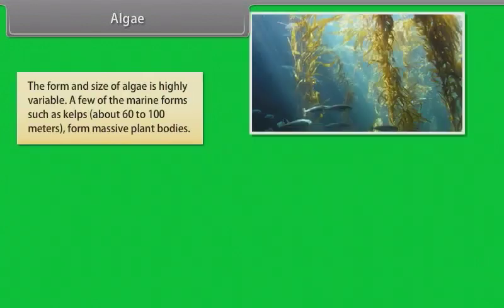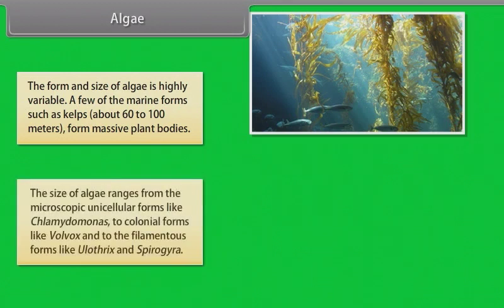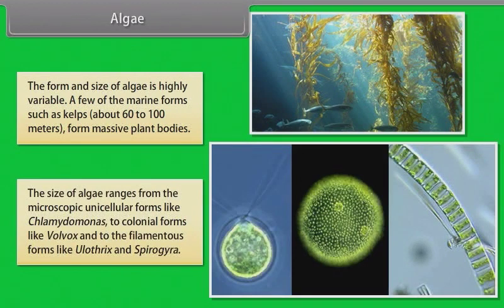The form and size of algae is highly variable. A few of the marine forms such as kelps, about 60 to 100 meters, form massive plant bodies. The size of algae ranges from the microscopic unicellular forms like chlamydomonas to colonial forms like volvox and to the filamentous forms like ulothrix and spirogyra.